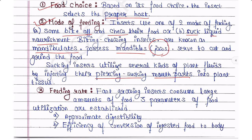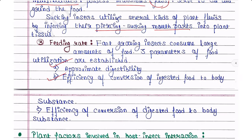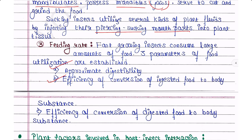Feeding rate: fast-growing insects consume large amounts of food. Three parameters of food utilization are: first, approximate digestibility — insects that digest faster will take more food; second, efficiency of conversion of ingested food to body substances — efficient converters take more food; and third, efficiency of conversion of digested food to body substance.